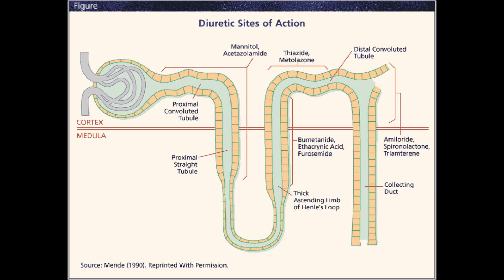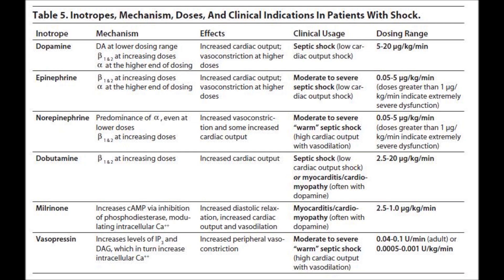Diuretics increase urine output and are used in hypertension and CHF. Examples include bumetanide (Bumex), ethacrynic acid (Edecrin), furosemide (Lasix), hydrochlorothiazide (HydroDIURIL), metolazone (Zaroxolyn), spironolactone (Aldactone), and torsemide (Demadex). Caution: monitor for low serum potassium. Patients should always be on intake and output (I&O) monitoring.